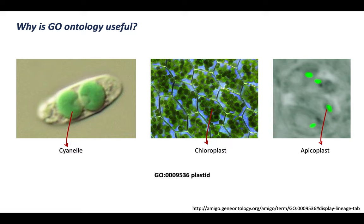Why is Gene Ontology useful? Here's an example. A cyanelle is an organelle that performs photosynthesis. A chloroplast also performs photosynthesis. And the apicoplast does not perform photosynthesis, yet it is derived from an ancestral chloroplast — so there is a connection. All three of these can be ascribed to the GO term that refers to a plastid. Now you have a term that unifies these three different compartments. So you can take genes whose function takes place in the apicoplast, chloroplast, or cyanelle, and ascribe them all to the unified location term: plastid.